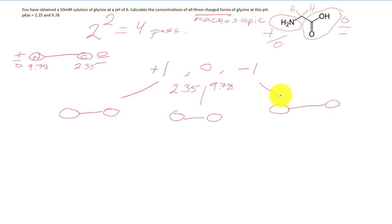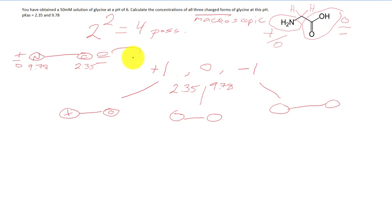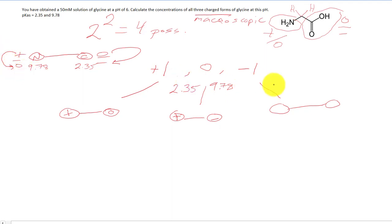We can draw out the protonation states for all three charge forms. For the +1 form, the N is protonated (positive) and the C is protonated (neutral). For the 0 form, we've passed the pKa of 2.35, so the C-terminus becomes deprotonated while the N-terminus remains protonated. For the −1 form, we've passed the pKa of 9.78, so the N-terminus also deprotonates, giving a neutral N-terminus and a negative C-terminus.